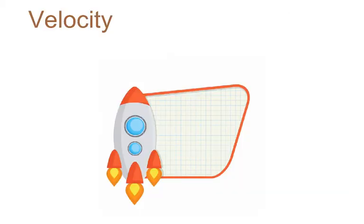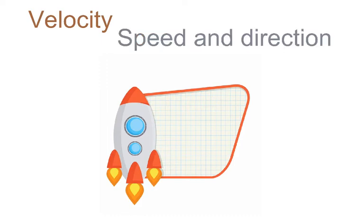The velocity of an object is the rate of change of its position with respect to its frame of reference. It's its speed and direction. So velocity is an object's speed and direction.